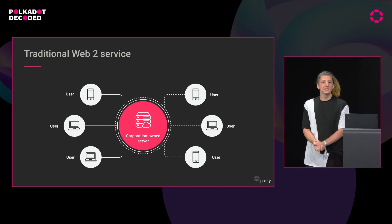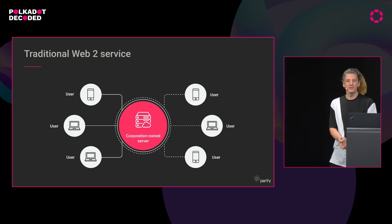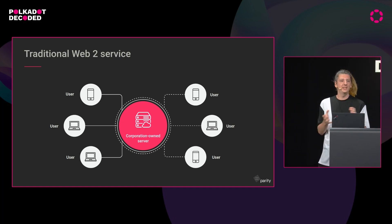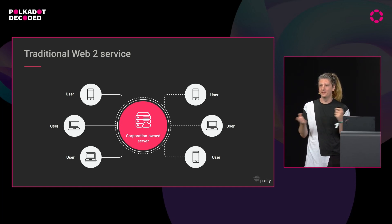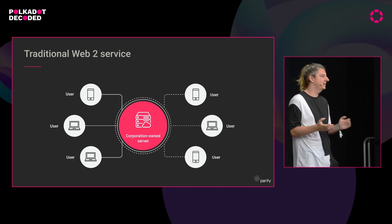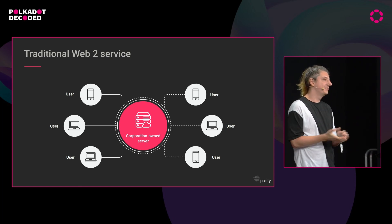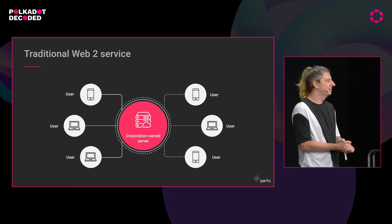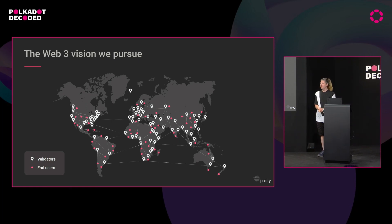In order to understand what a Light Client is and especially why you should care, this is how a traditional Web2 service works. You have end users trying to use a service like Facebook, Google, or your favorite airline booking a ticket. They connect to a server that is owned by the corporation and just use the service. This is the model that the Web is currently based on, and we're trying to switch out of it. This is the Web3 vision we would like to pursue.